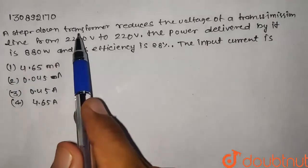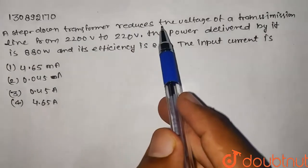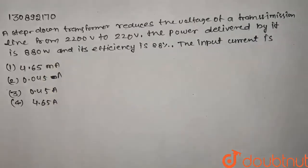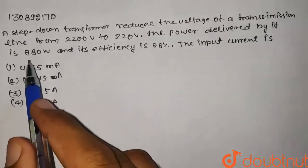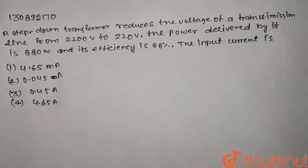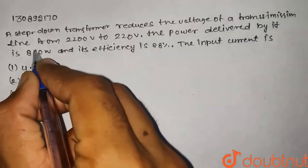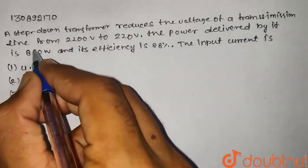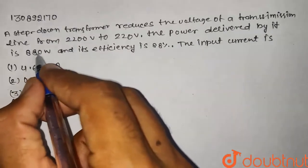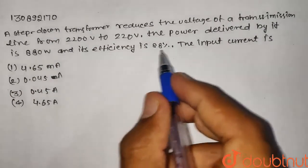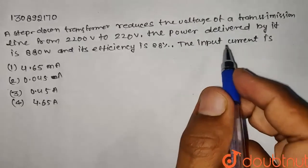Hello guys, a step down transformer reduces the voltage of the transmission line from 2200 to 220 volts. The power delivered by it is 880 watts and its efficiency is 88%. The input current is to be determined.